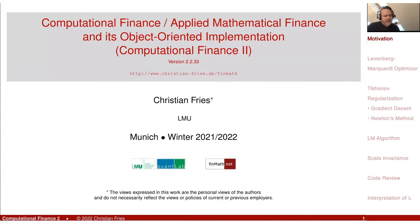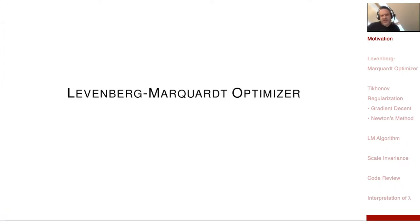Sometimes when you calibrate a model using an optimizer from a library, you see that it converges slowly, or doesn't converge as expected, or doesn't find a solution at all. Then it's really important to understand the meaning of the parameters and what the algorithm is doing. That's why we look at the popular Levenberg-Marquardt optimizer.